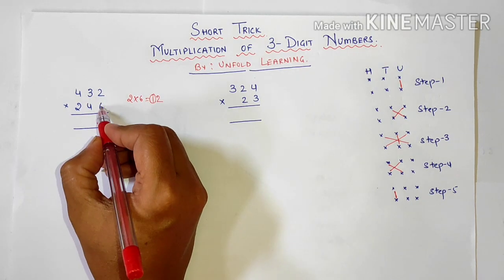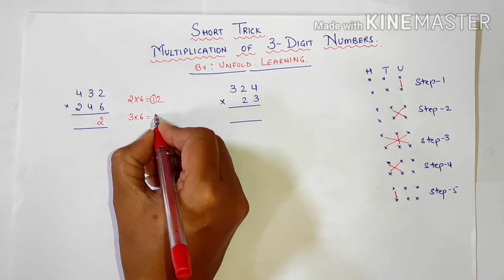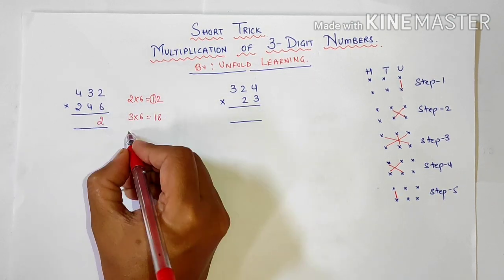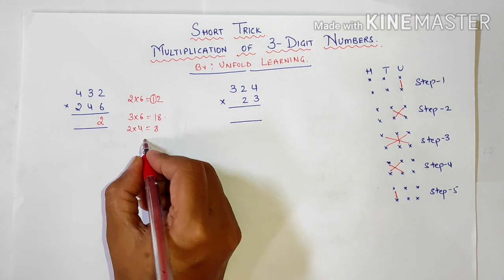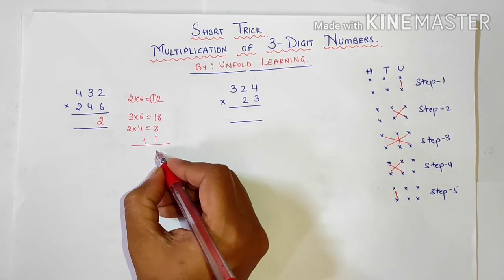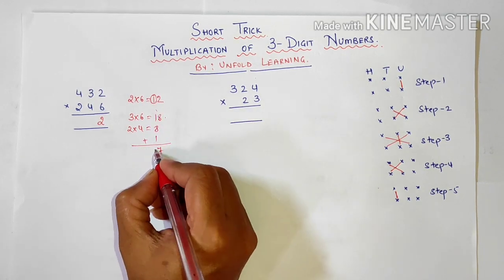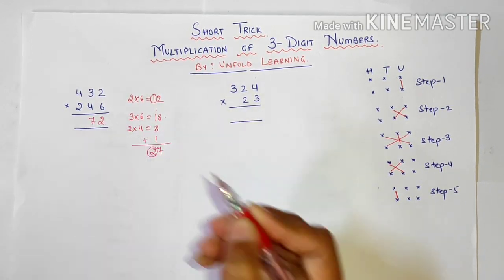Now tens and units place we will multiply. That is 3 into 6 is 18. 2 into 4 is 8. And carry over we have 1. Added 8 plus 8 is 16 plus 1 is 17. 1 carry that is 2. This will go to our carry over. I have here written 7.